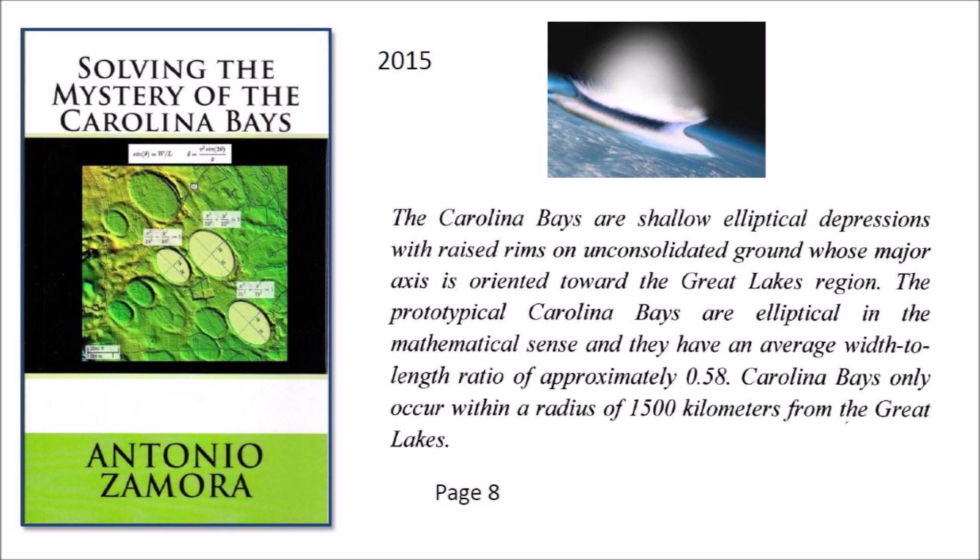The Carolina Bays are shallow elliptical depressions with raised rims on unconsolidated ground whose major axis is oriented toward the Great Lakes region. The prototypical Carolina Bays are elliptical in the mathematical sense and they have an average width-to-length ratio of approximately 0.58.